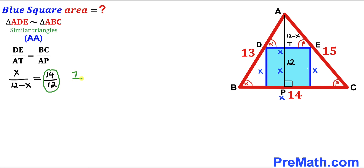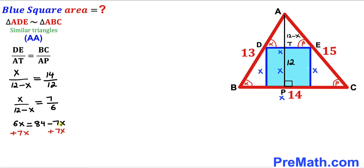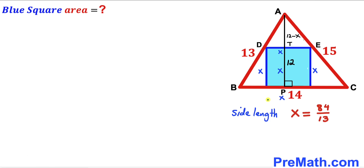The right-hand side 14/12 reduces to 7/6, so we have x / (12 − x) = 7 / 6. Cross-multiplying: 6x = 84 − 7x. Adding 7x to both sides: 13x = 84. Dividing both sides by 13 gives x = 84/13 units. So the side length of the blue square is 84/13 units.